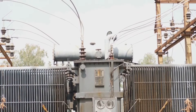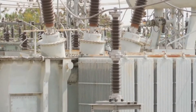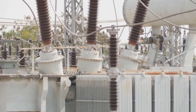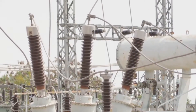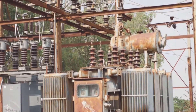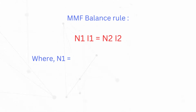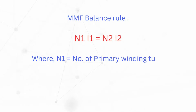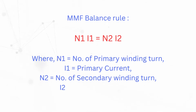In a power transformer, the primary current is a reflection of the secondary current, an equation determined by the MMF balance rule. This rule is a fundamental principle of the operation of a power transformer, serving as a foundation for its overall functionality. The MMF balance rule states that the product of the number of turns and current in the primary winding equals the product of the number of turns and current in the secondary winding, represented mathematically as N1I1 = N2I2.